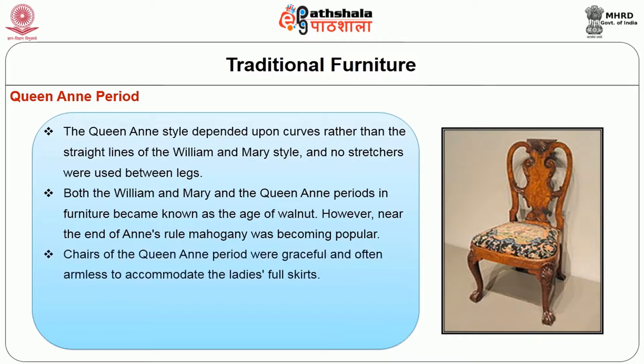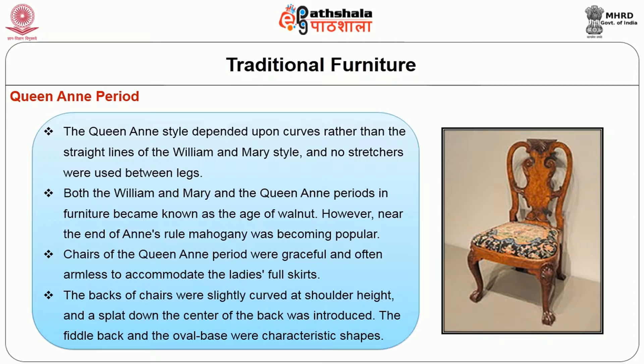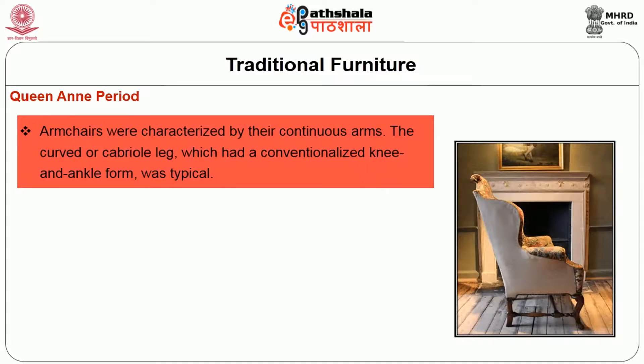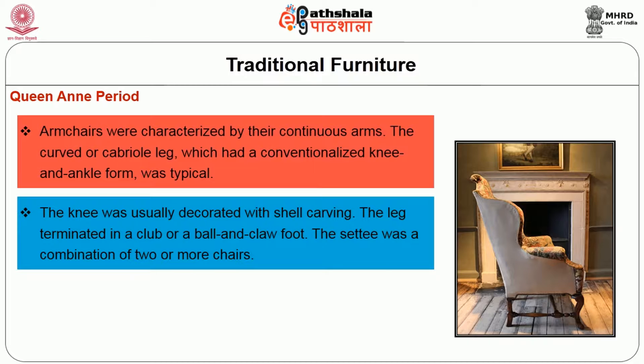Chairs of the Queen Anne period were graceful and often armless to accommodate the ladies' full skirts. The backs of chairs were slightly curved at shoulder height and a splat down the center of the back was introduced. The fiddle back and oval back chairs were the characteristic shapes. Arm chairs were characterized by their continuous arms. The curved cabriole leg, which had a conventionalized knee and ankle form, was typical. The knee was usually decorated with shell carving, and the leg terminated in a club or ball and claw foot. The settee was a combination of two or more chairs.